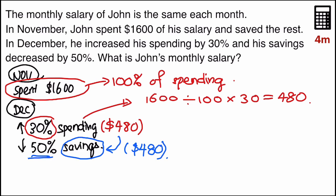So what is John's monthly salary? I want to find out his 100% of savings. That means in November. So I base it on November. I will take $480 times 2. I get $960.